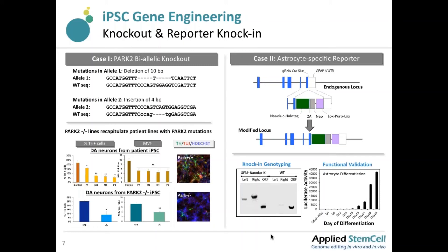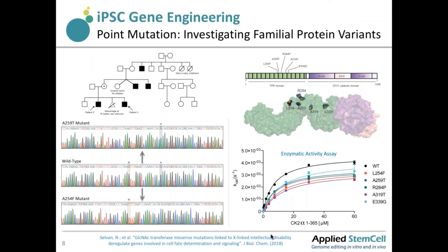This is an example of a mutation variant in a familial protein variant. Basically, a family carries a mutation in a particular gene, and we created these mutation variants using gene editing. We started from a wild-type cell line and introduced point mutations corresponding to the specific mutation state found in the patients. When we performed an enzymatic activity assay, we observed a clear difference in enzyme activity compared to the wild-type iPS cell line.